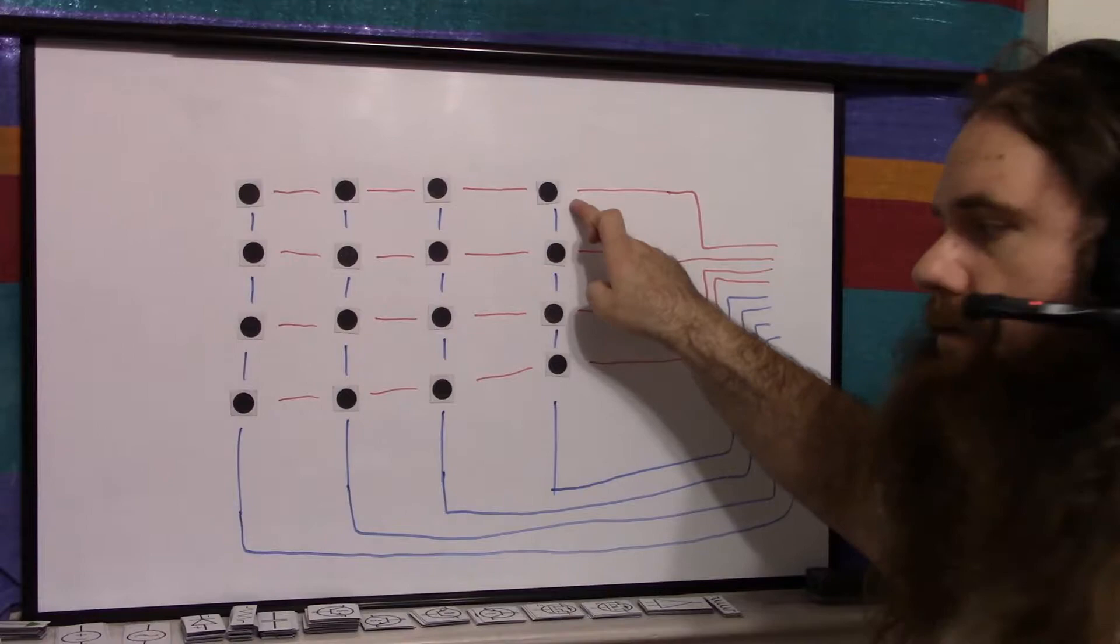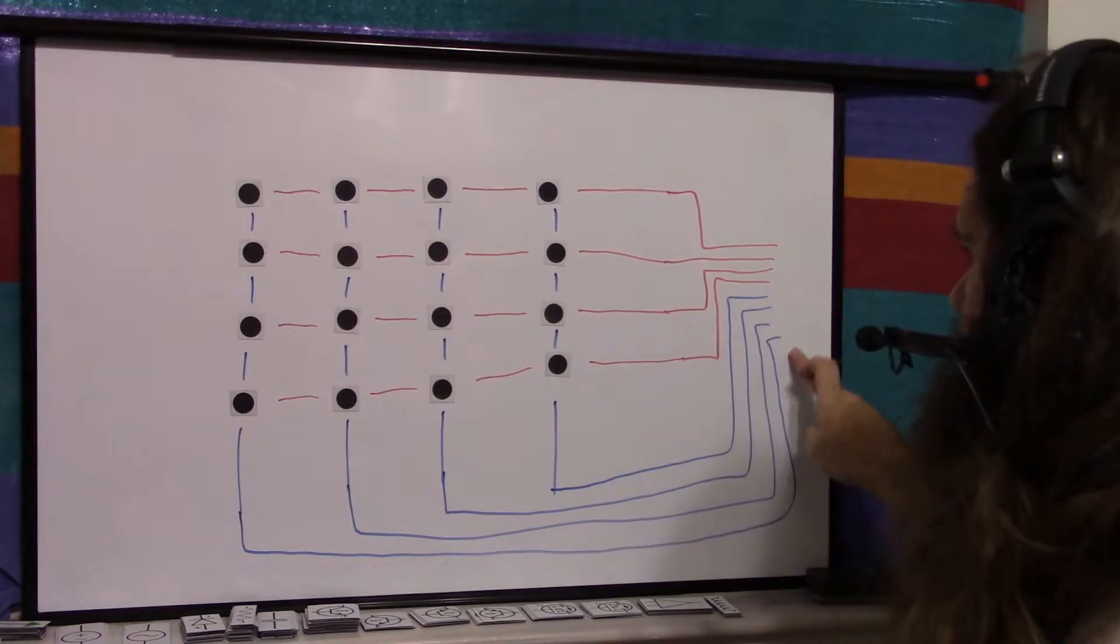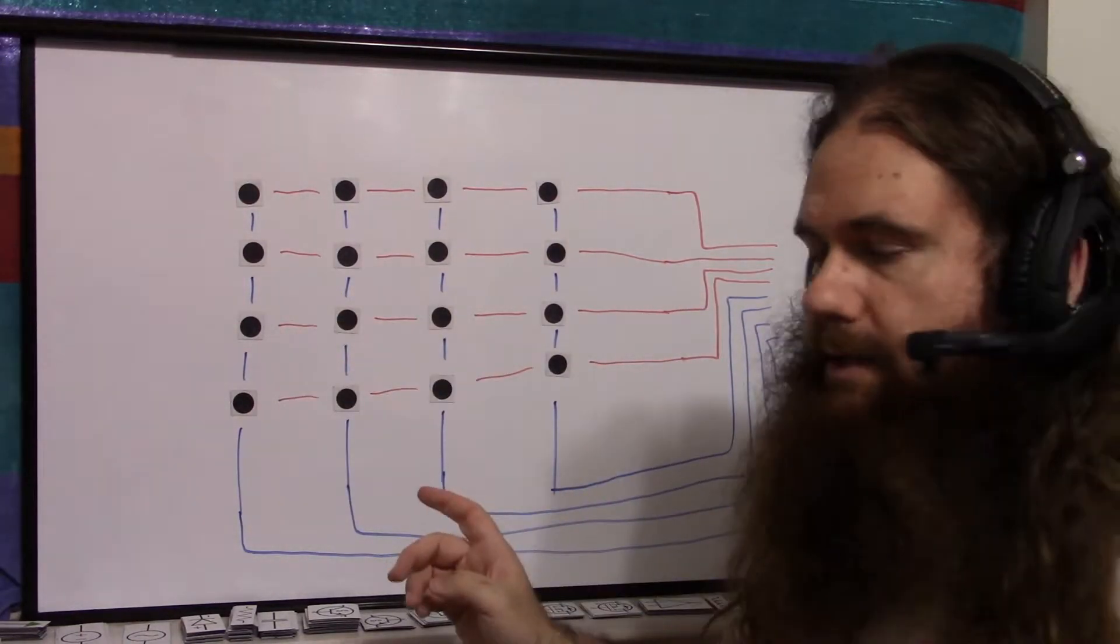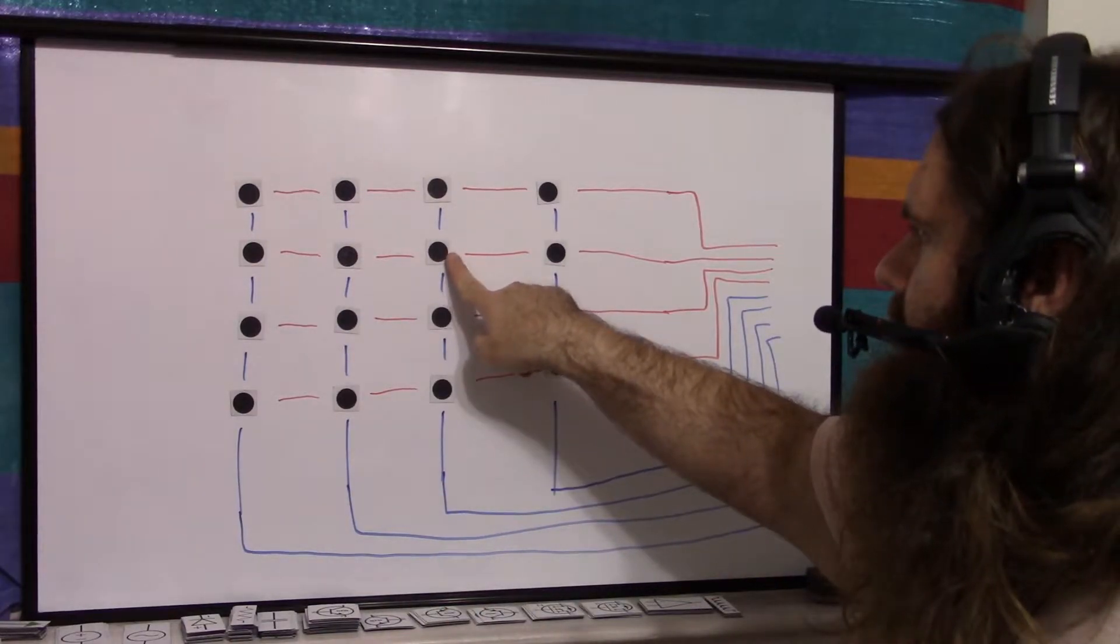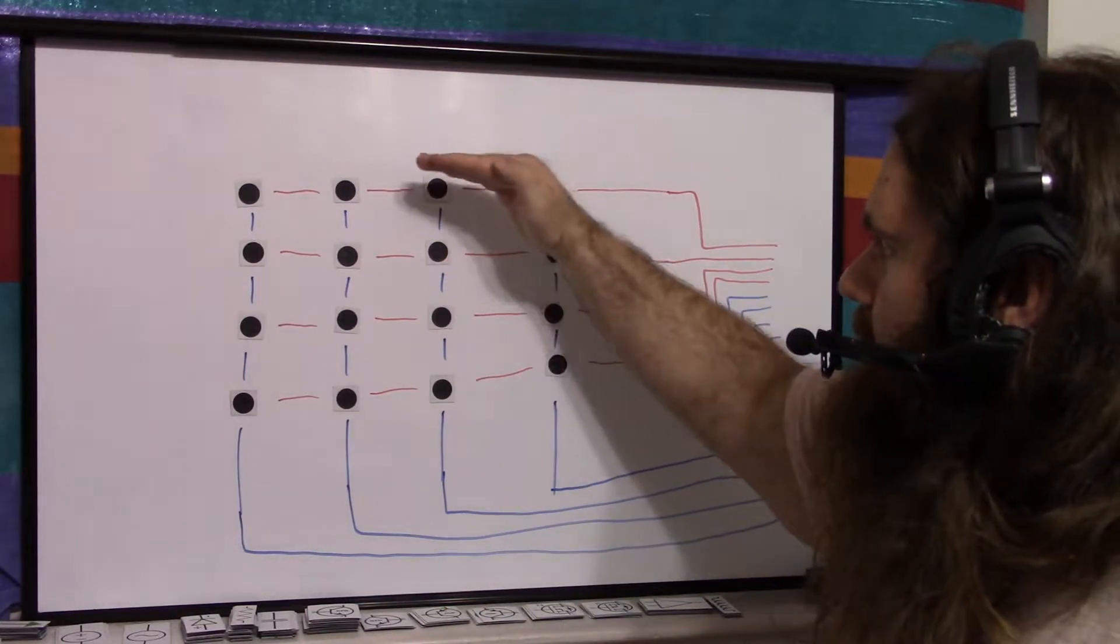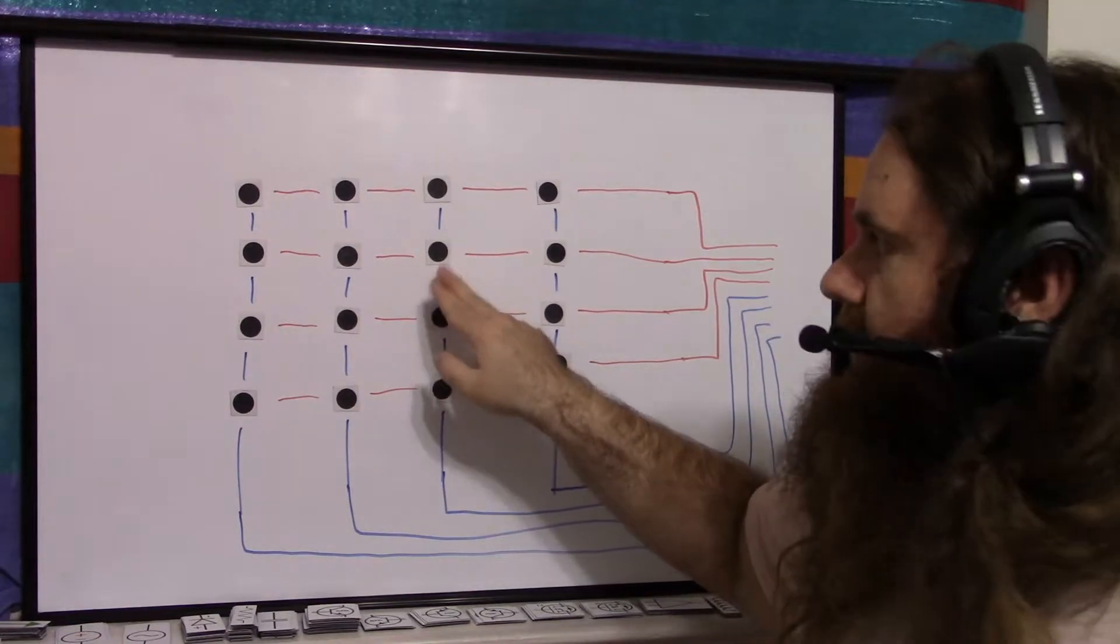So you'd pick this row and you'd power that row. And then you would read each of the four column lines. So if you were pressing this button and you were powering any other row, then nothing would happen.